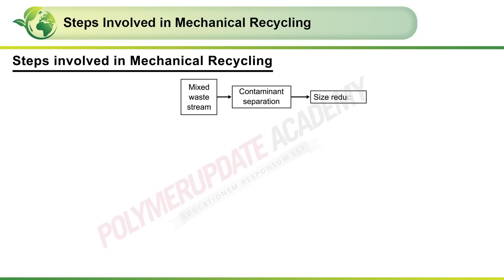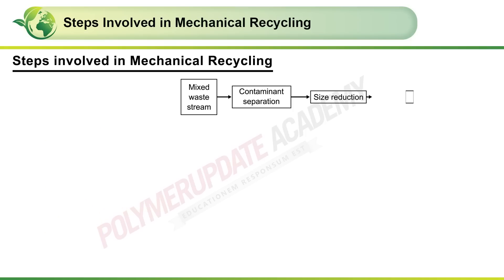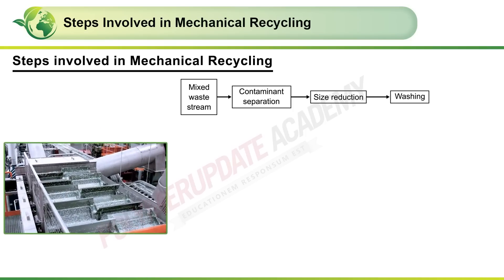The next stage consists of milling down the sorted plastics with the help of a hammer mill. The following stage consists of washing and drying, wherein the small chunks are passed through washing,